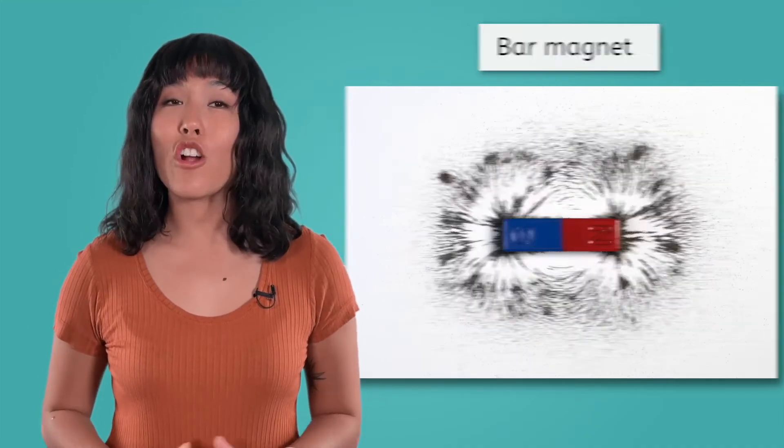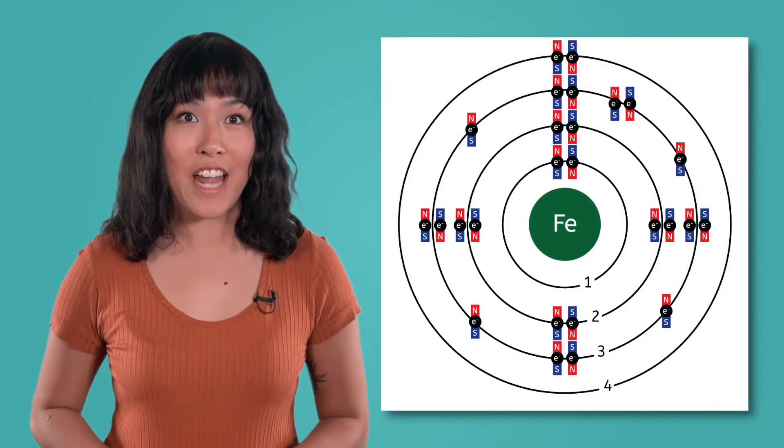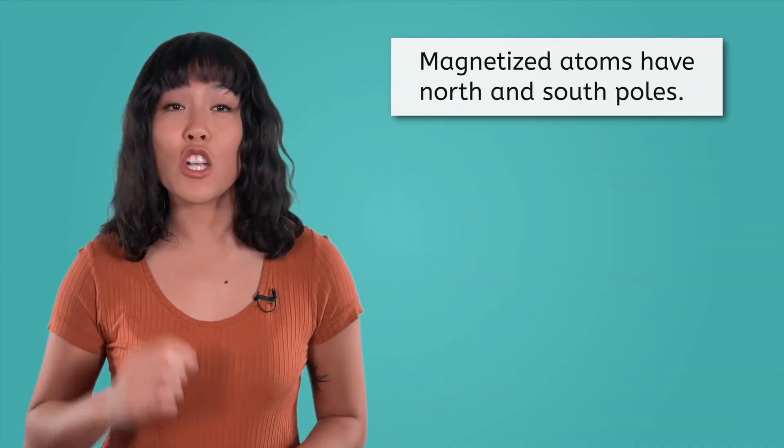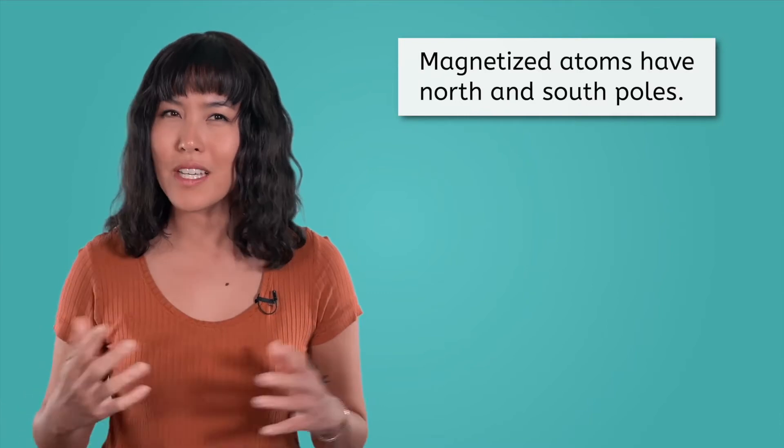Simply put, magnets are objects with magnetized atoms. But what is a magnetized atom? Well, it's an atom with a north and south pole, just like a bar magnet.